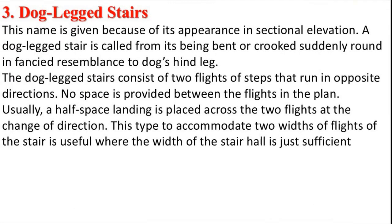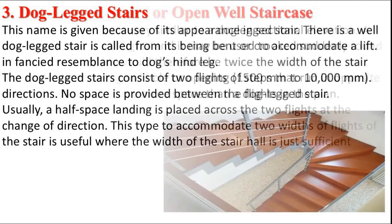Dog leg stairs get their name from their appearance in section elevation, resembling a dog's hind leg — bent or angled sharply. A dog leg stair consists of two flights of steps running in opposite directions. No space is provided between the flights in plan. Usually a half space landing is placed across the two flights at the change of direction. This type is useful where the width of the stair hall is just sufficient.